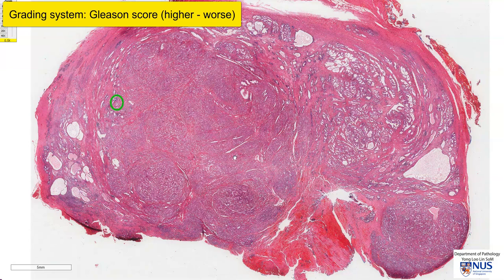The Gleason grade goes from grade 1 to grade 5, but most of the time for carcinomas, we start at grade 3. So the overall Gleason score starts at 6, which is 3 plus 3, all the way up to 10, which is 5 plus 5. For example, a score of 3 plus 3 means that basically the entire tumor is composed of Gleason grade 3 tumor.